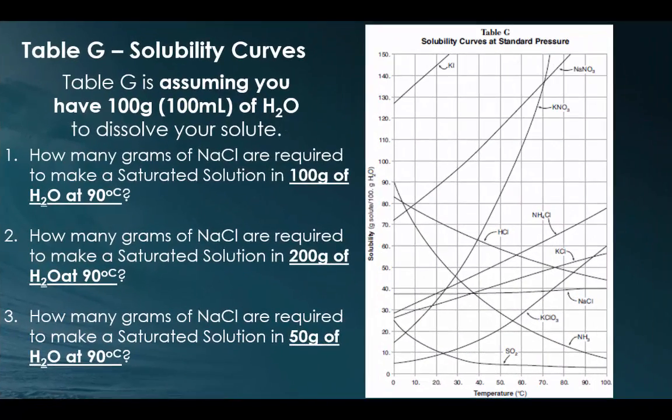But now let's use table G, and let's assume that we no longer have 100 grams or 100 milliliters of water. Let's look at the first example. In the first example, we have 100 grams of water, so everything that we've been doing so far is as normal. For the second and the third question, though, notice that we're doubling the amount of water, and in the third question, we're halving the amount of water. Therefore, respectively, you should be doubling the amount of sodium chloride in question two, and you should have half the amount of sodium chloride in question three.